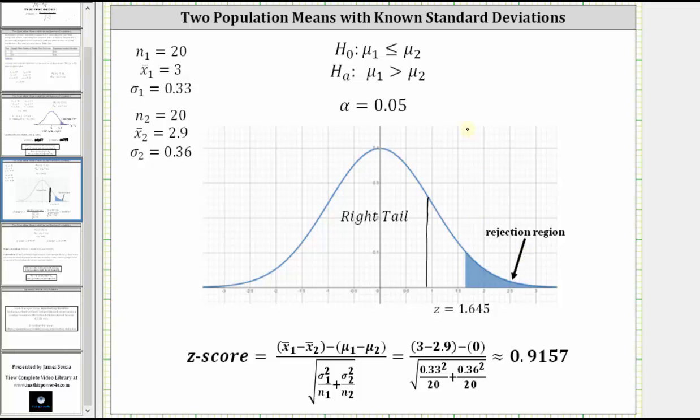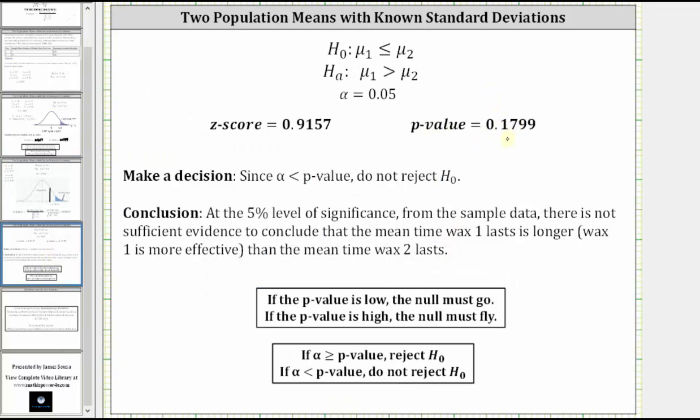But let's draw the same conclusion comparing the p-value to alpha. Notice how the p-value is high or greater than alpha, and when the p-value is high, the null must fly, or more formally, because the p-value is greater than alpha, we do not reject the null hypothesis, which means at the 5% level of significance from the sample data, there is not sufficient evidence to conclude that the mean time wax one lasts is longer than the mean time wax two lasts.